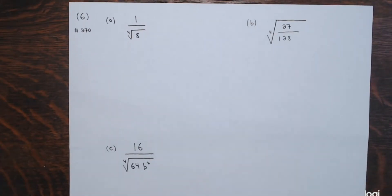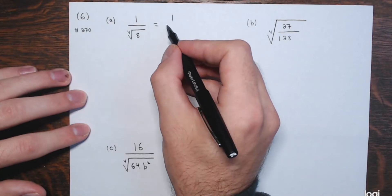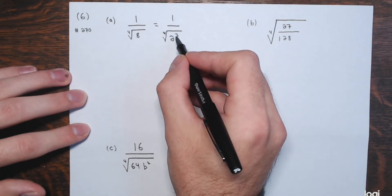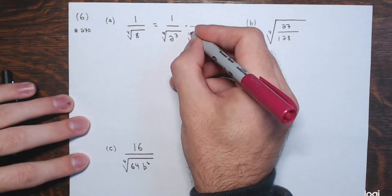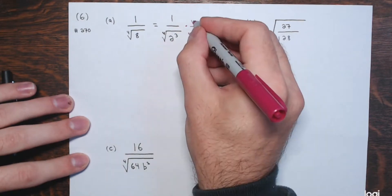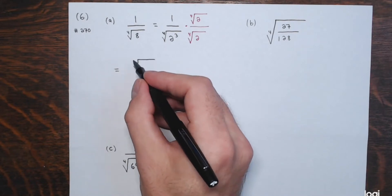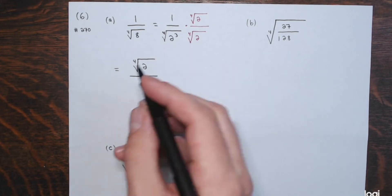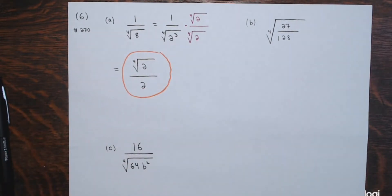Number 6 is exercise 270 from the text — all fourth roots in the denominator. Part a: we have 1 divided by the fourth root of 8. Since 8 is 2 to the third, I need just one more factor of 2 to make 2 to the fourth — a perfect fourth power. So I multiply numerator and denominator by the fourth root of 2. The numerator becomes the fourth root of 2, and the denominator becomes the fourth root of 16, which is 2. The result is the fourth root of 2 divided by 2 — I leave it to you to verify with a calculator.